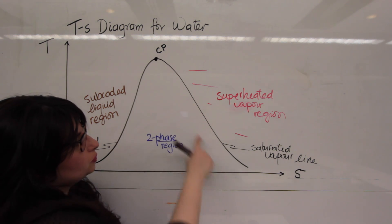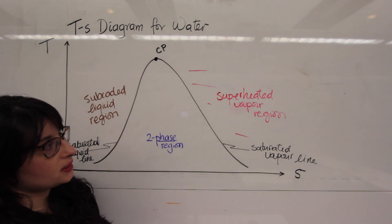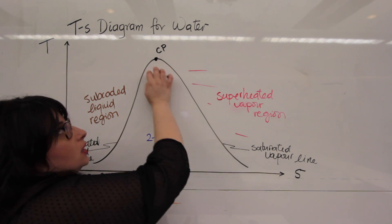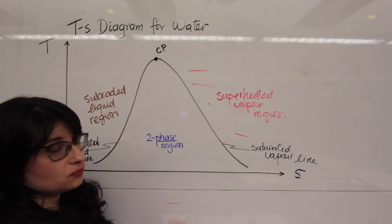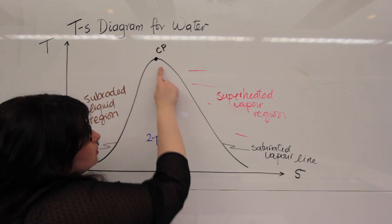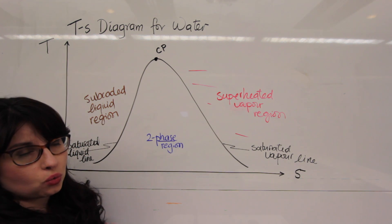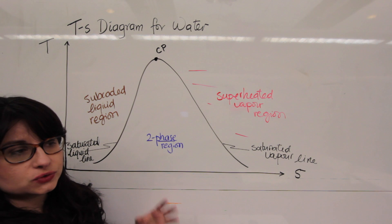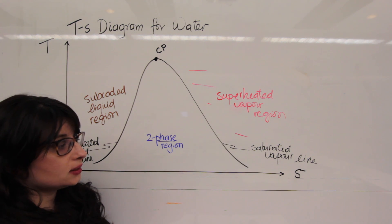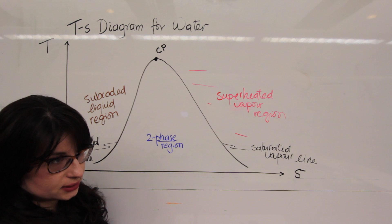Why is the saturation dome important? Well, the properties of your fluid could essentially lie anywhere on this graph. If the properties happen to be right on this line, you only need one point of reference to find all the other ones — and that's usually either the saturated pressure or the saturated temperature.